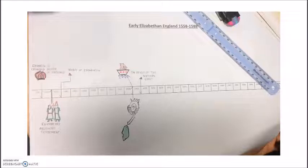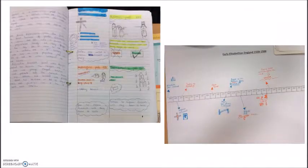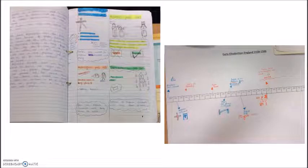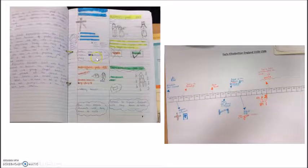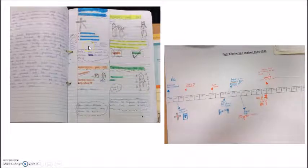So for example, when Elizabeth is crowned, we've got the image of the crown there. So the more you can come up with in terms of pictures, the better. So you notice on this slide here, we've got pictures to go with the text just to help us remember.